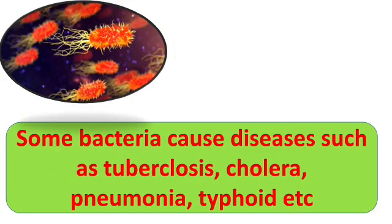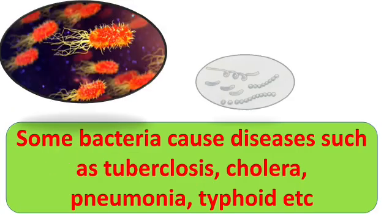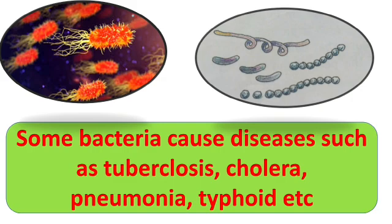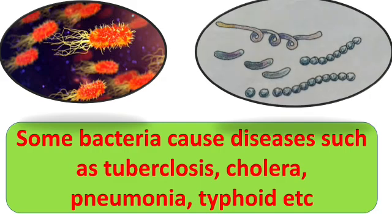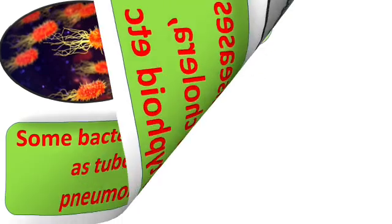Bacteria come in a number of shapes, ranging from spheres to rods and spirals. Some bacteria cause diseases such as tuberculosis, cholera, pneumonia, typhoid, etc.